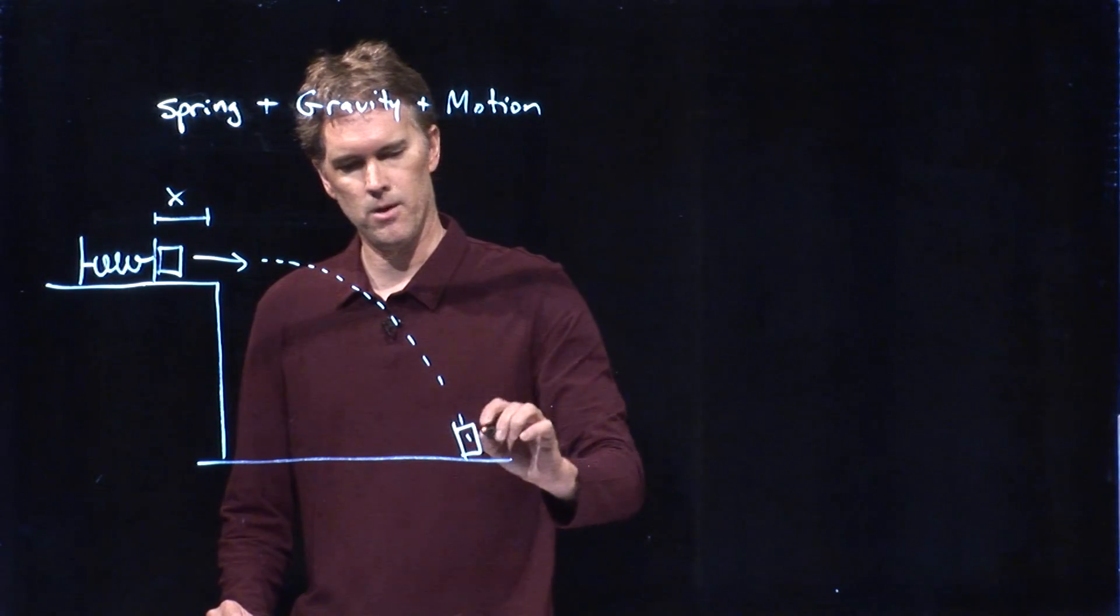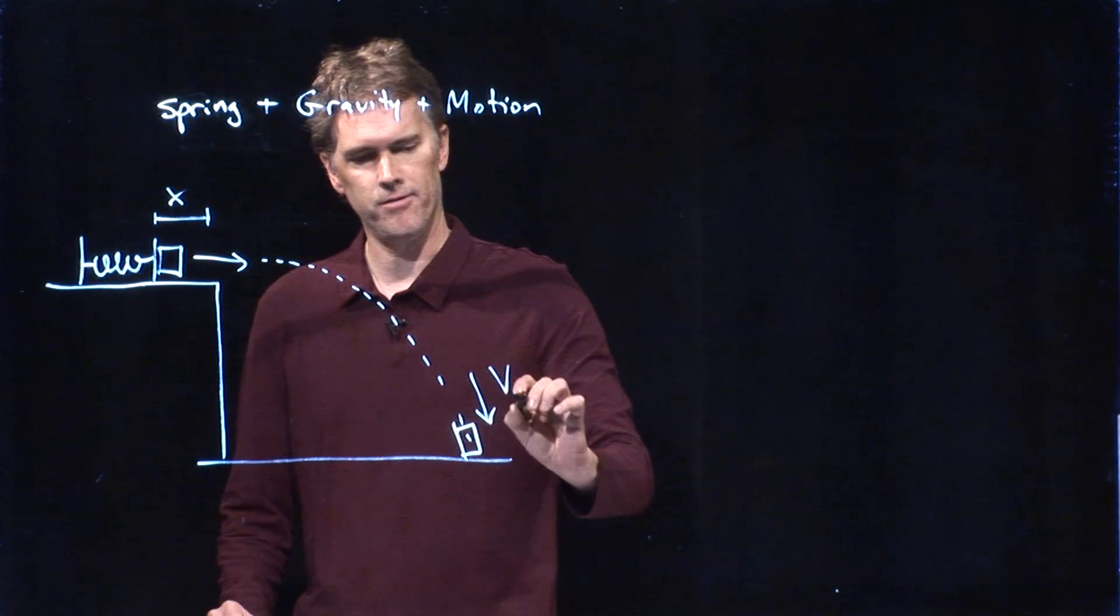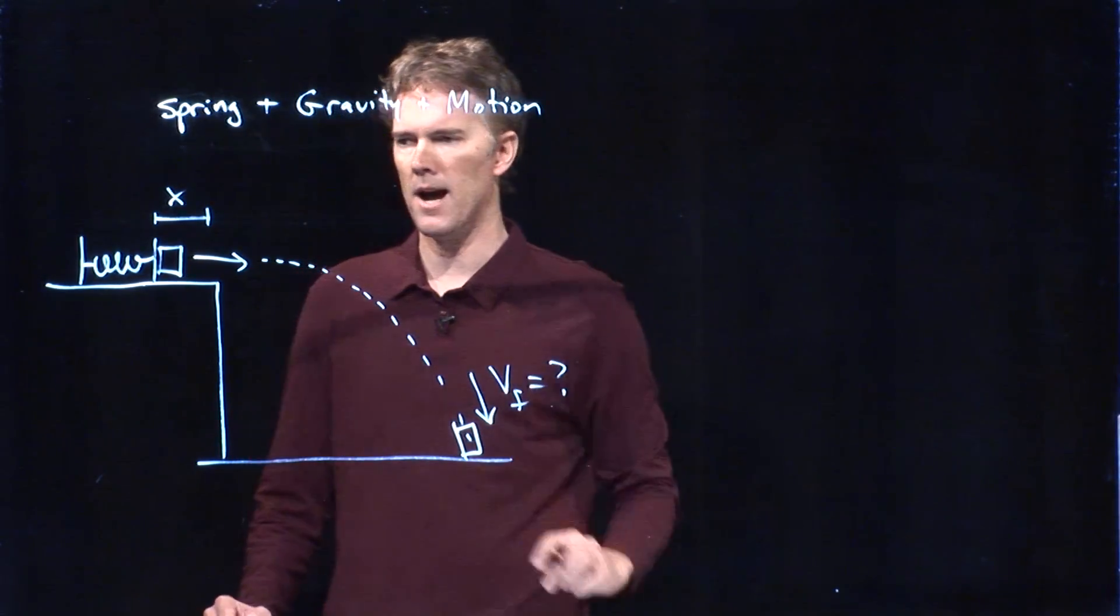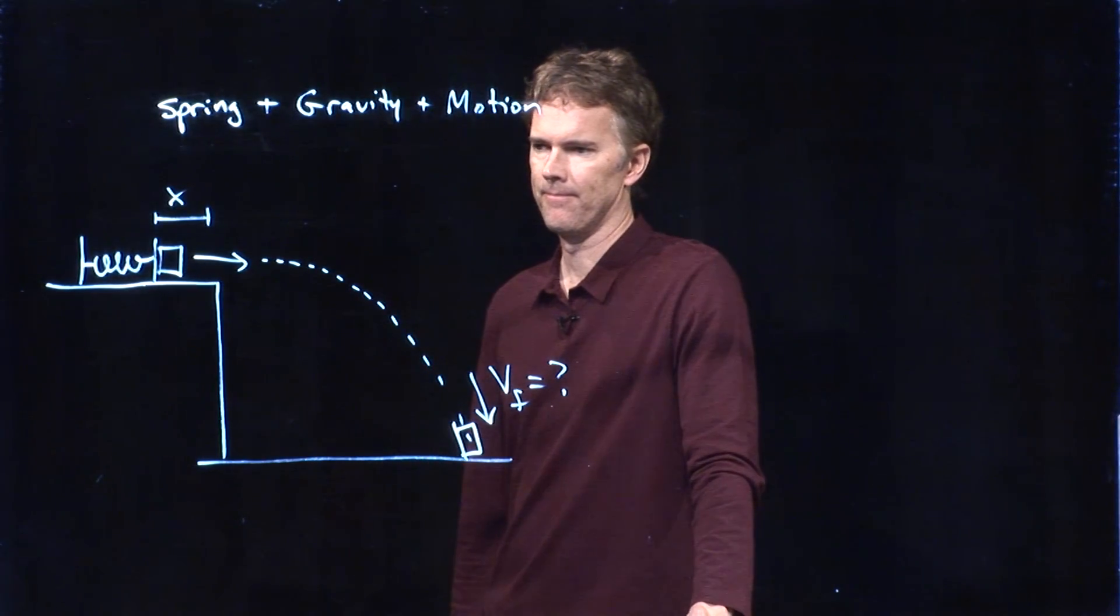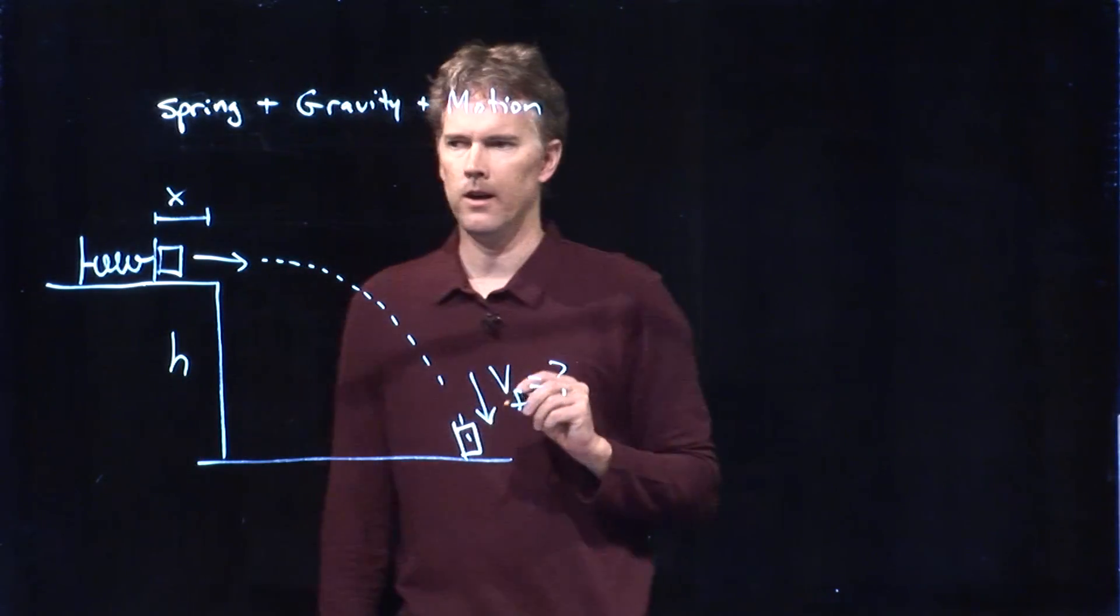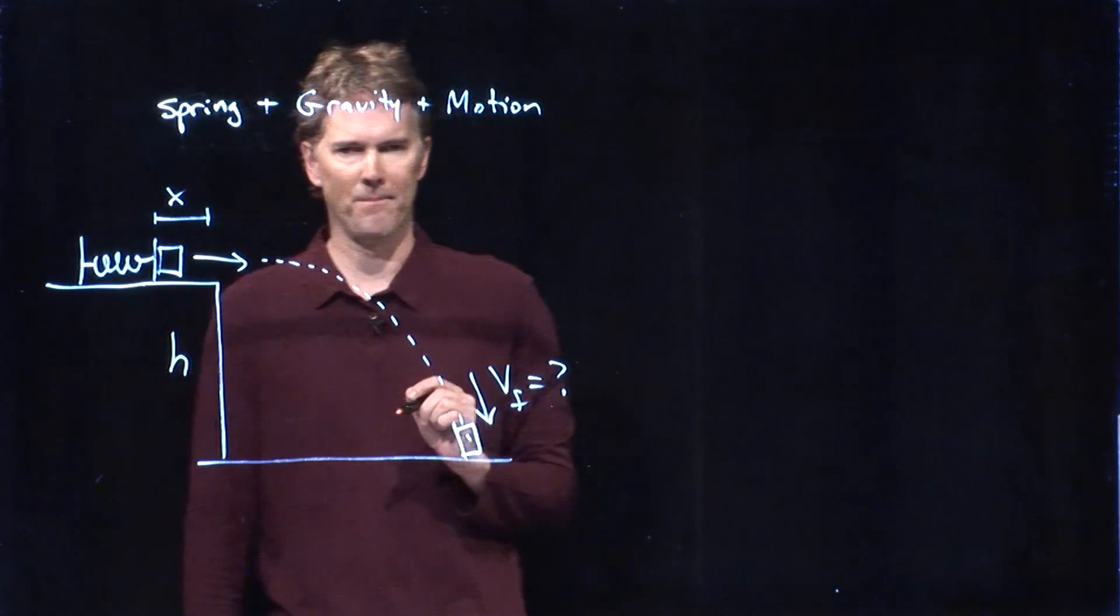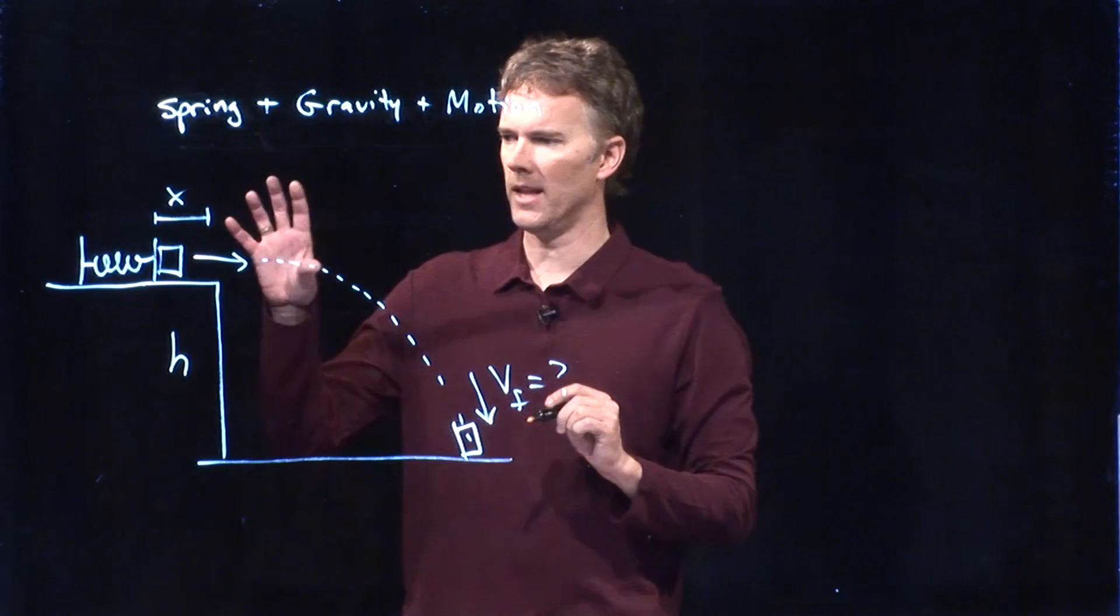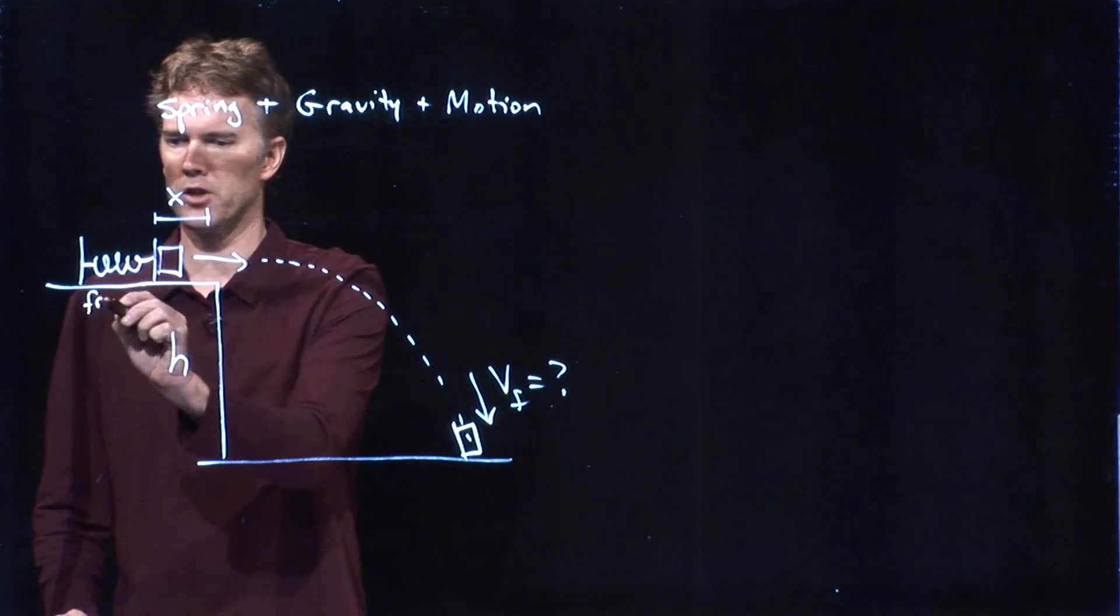We want to figure out what is VF for that box when it hits the ground. And we will tell you that this is height h, and the box is mass m. And let's say this is frictionless. There's no friction on the table here.